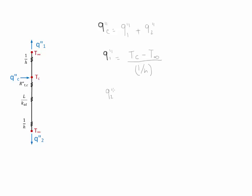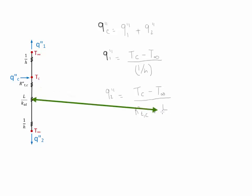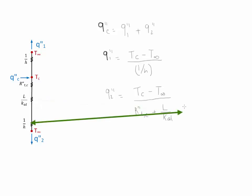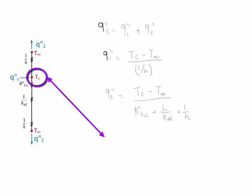Therefore, Q2 is equal to the change in temperature between those two points — Tc minus T-infinity — divided by the sum of the resistances between those points: the resistance of the epoxy, the resistance to conduction, and the resistance due to convection. Plugging flux 1 and flux 2 into the equation for Qc and solving for Tc, we find that Tc equals T-infinity plus Qc times the quantity h plus 1 over R-tc, resistance L divided by K (conduction resistance), and convection resistance, all to the negative one power.